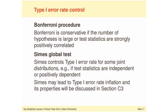Now let us go over the basic properties of the Bonferroni procedure and the Symes global test. The Bonferroni procedure controls the family-wise error rate in any multiplicity problem, but it tends to be quite conservative, especially if the number of hypotheses is large or the hypothesis test statistics are strongly positively correlated. This multiplicity adjustment is more stringent than it needs to be to maintain the family-wise error rate at the desired level.